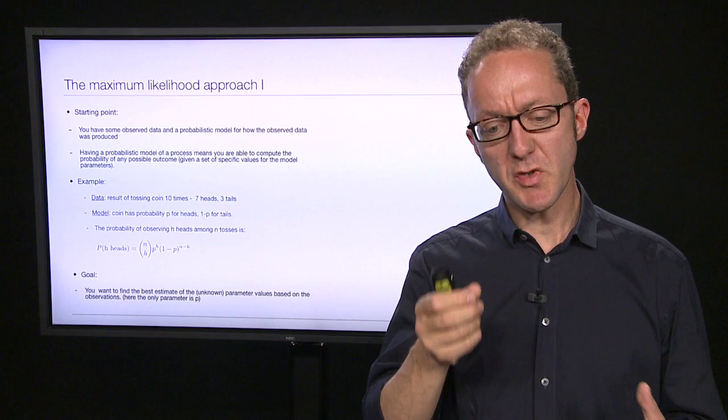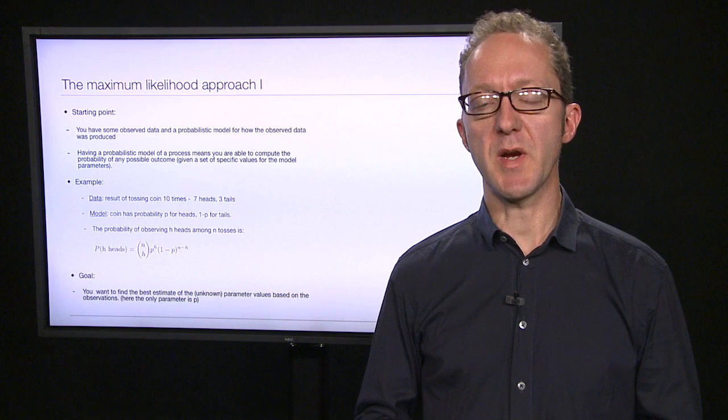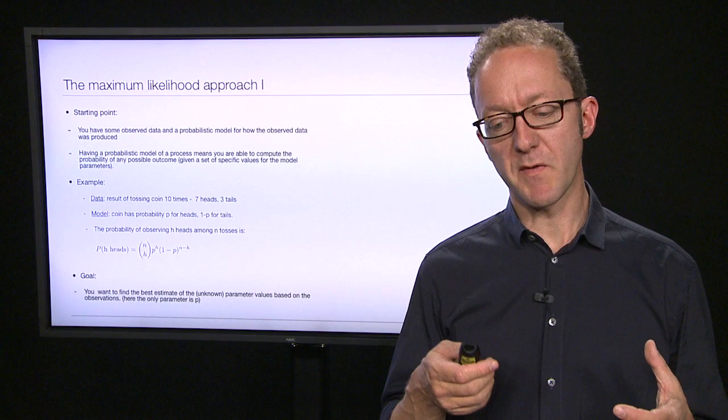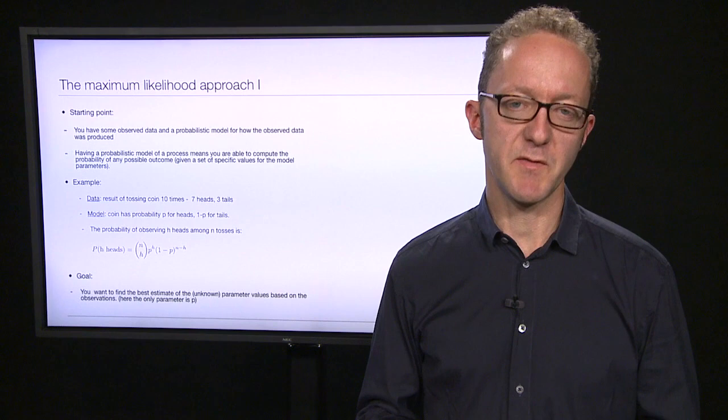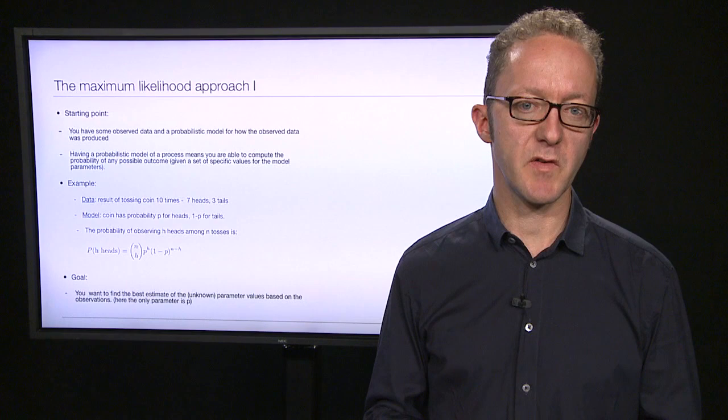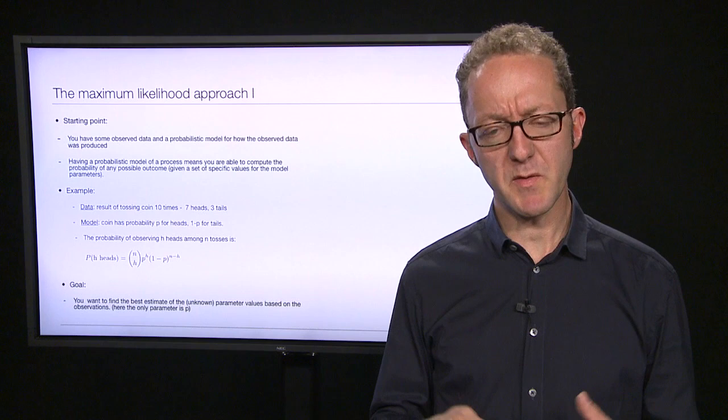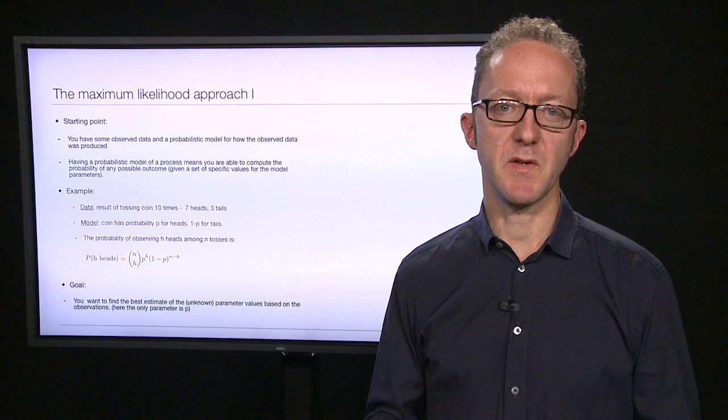Before we get back to those actual models of substitution in a phylogenetic context, I would like to first give you a very rapid introduction to maximum likelihood as such. Maximum likelihood is a way of fitting models and estimating parameters from data, used not just in phylogeny but in all sorts of scientific contexts. The idea is quite simple, though some of the terms may be difficult, so I'll walk you through a simple coin tossing example.